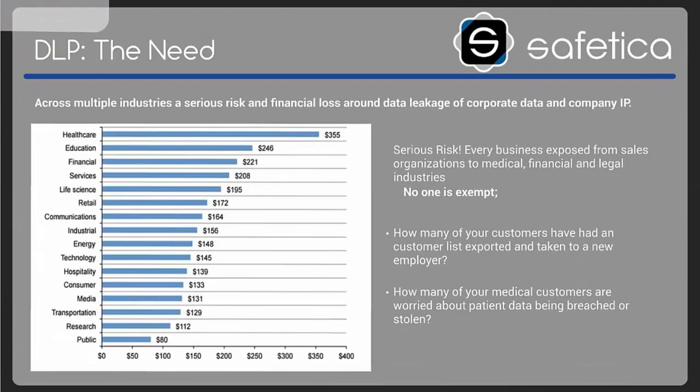Looking at the chart on the left-hand side, the numbers next to each industry represent the amount of money they lose per record that's leaked — and this applies to the small to medium-sized market more than ever. With healthcare at the top losing $355 for every record that leaks, even a small practice will have thousands of medical records, and if those records were all to leak at once, that hit could easily put them out of business. And if that initial hit doesn't, there are residual effects we'll get to in a few moments.